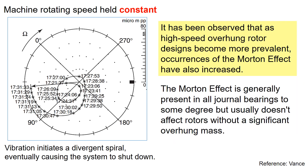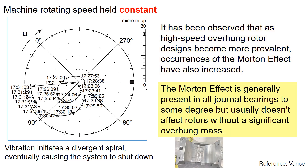It has been observed that as high-speed overhung rotor designs become more prevalent, occurrence of the Morton Effect has also increased. The Morton Effect is generally present in all journal bearings to some degree, but usually does not affect rotors without significant overhung masses.